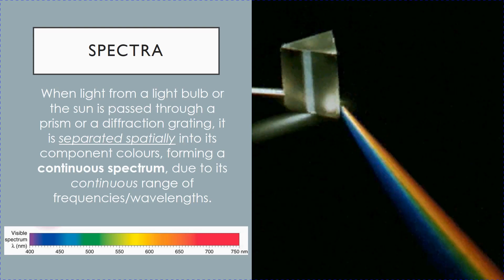If you recall what you have learned in the topic of superposition for a diffraction grating, different wavelengths will be diffracted at different angles. So when you pass light from a light bulb or sunlight through a diffraction grating, it will be separated spatially to form a continuous spectrum, because light from the sun contains a continuous range of frequencies or wavelengths. So what you get is a band of rainbow colors.